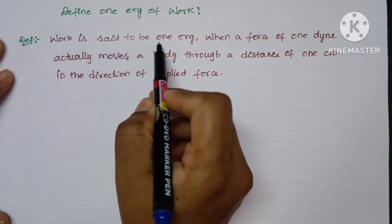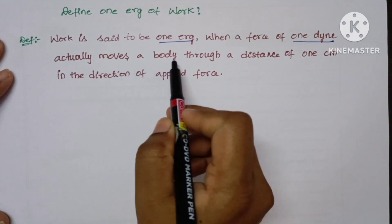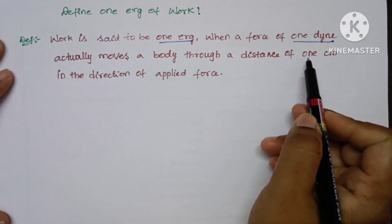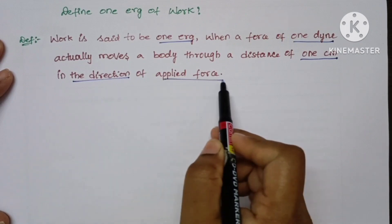Work is said to be one erg when a force of one dyne actually moves a body through a distance of one centimeter in the direction of applied force.